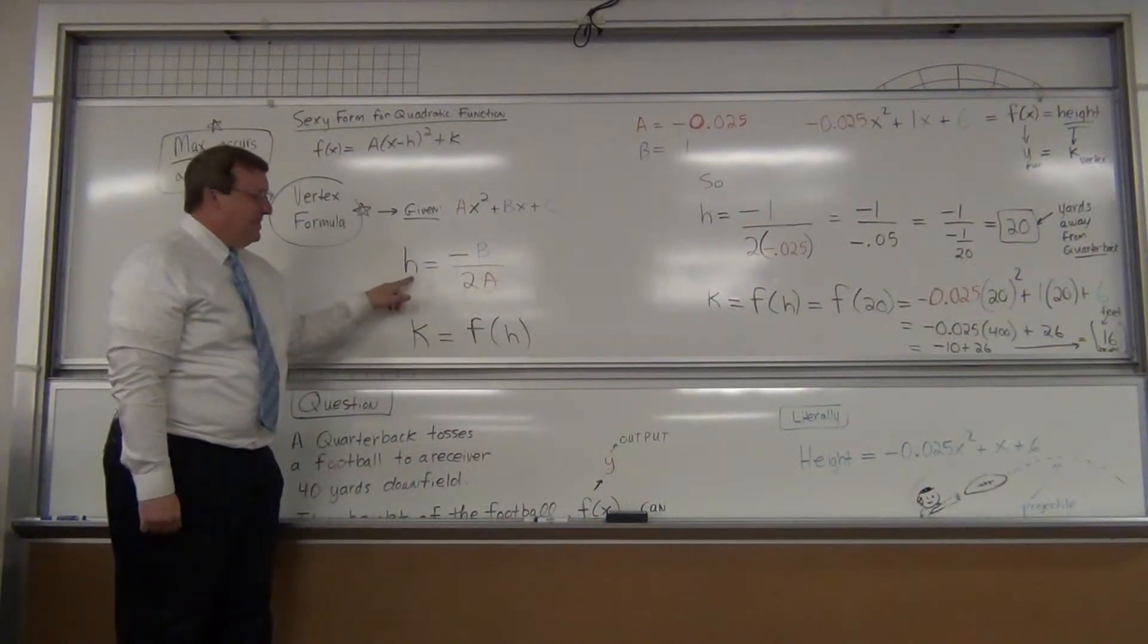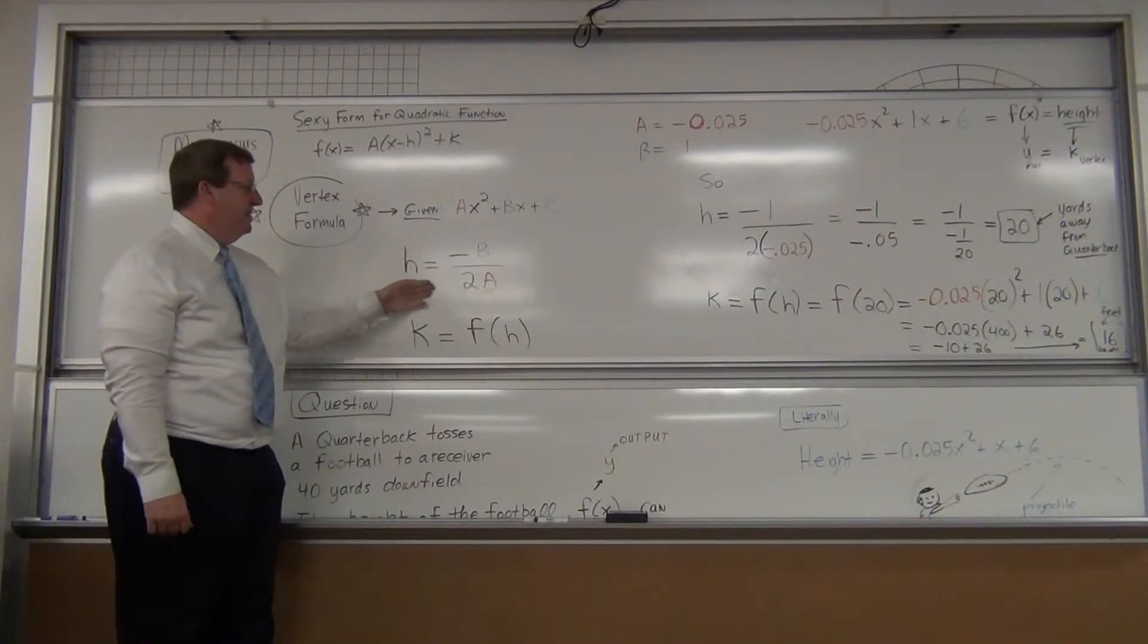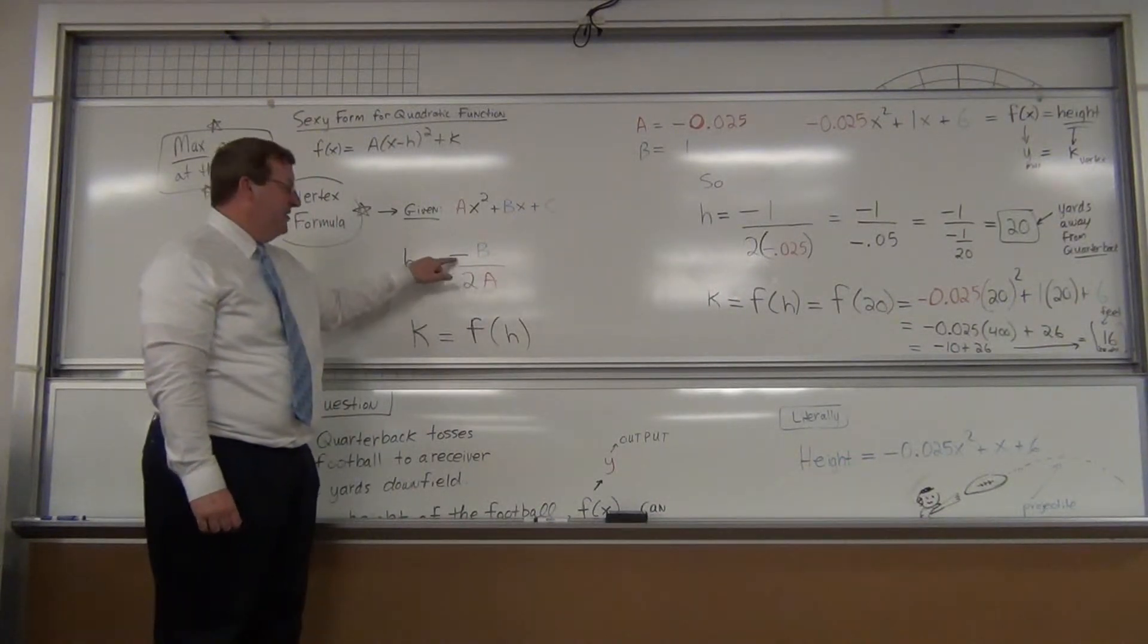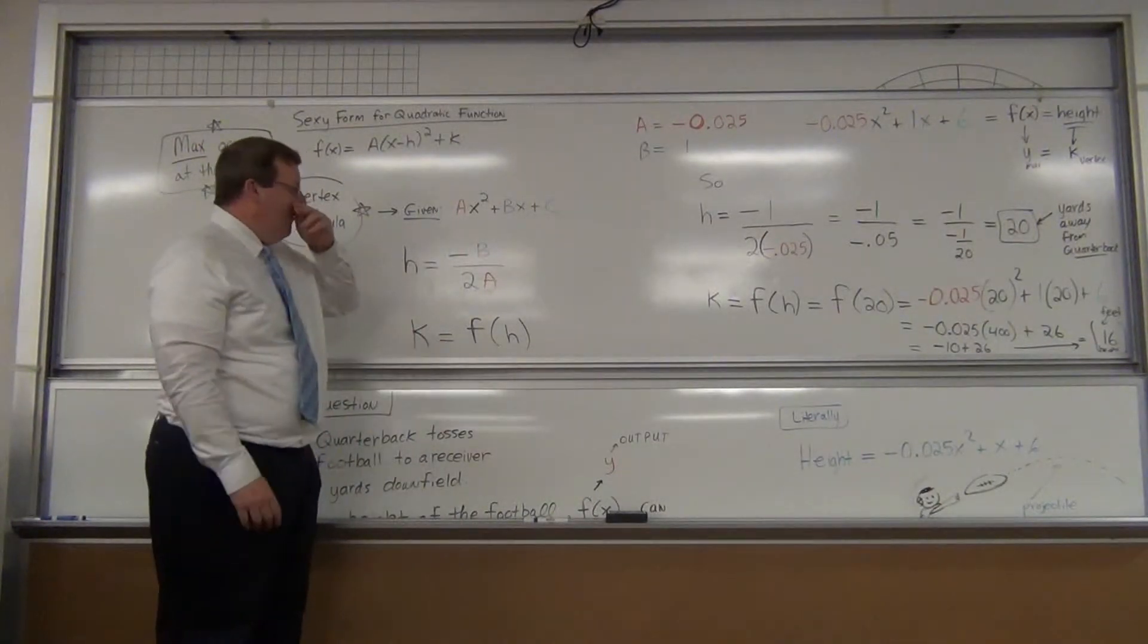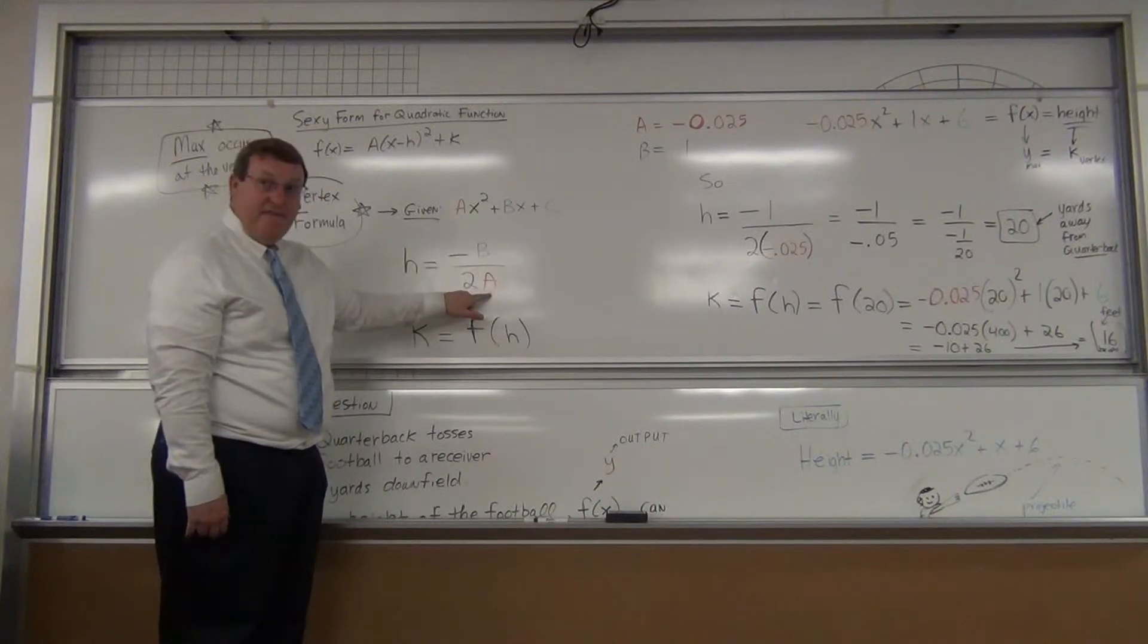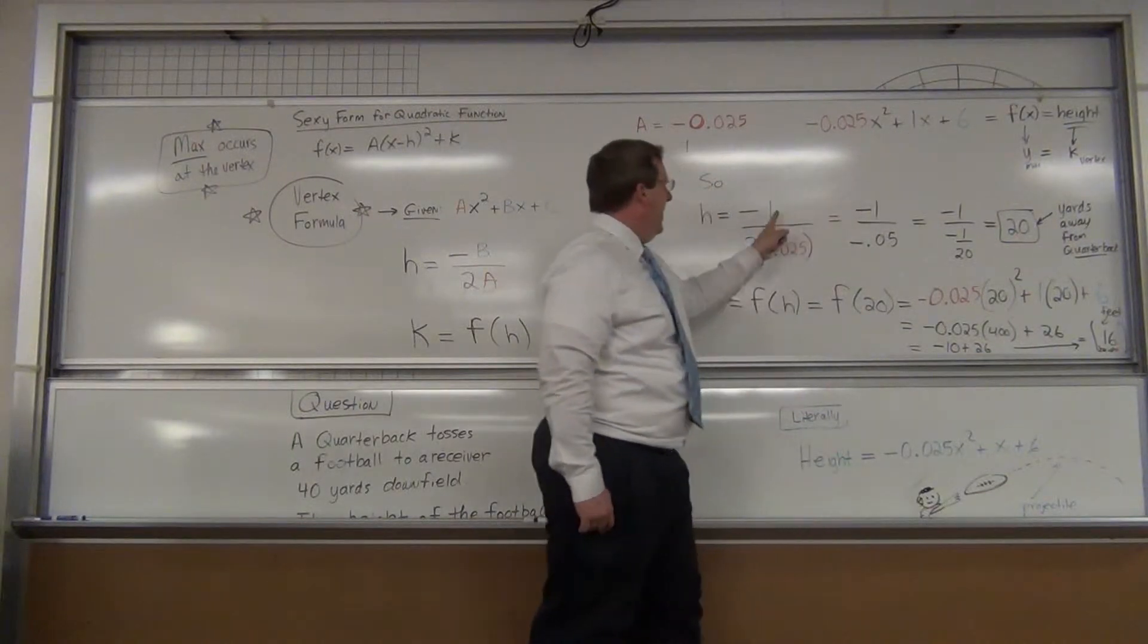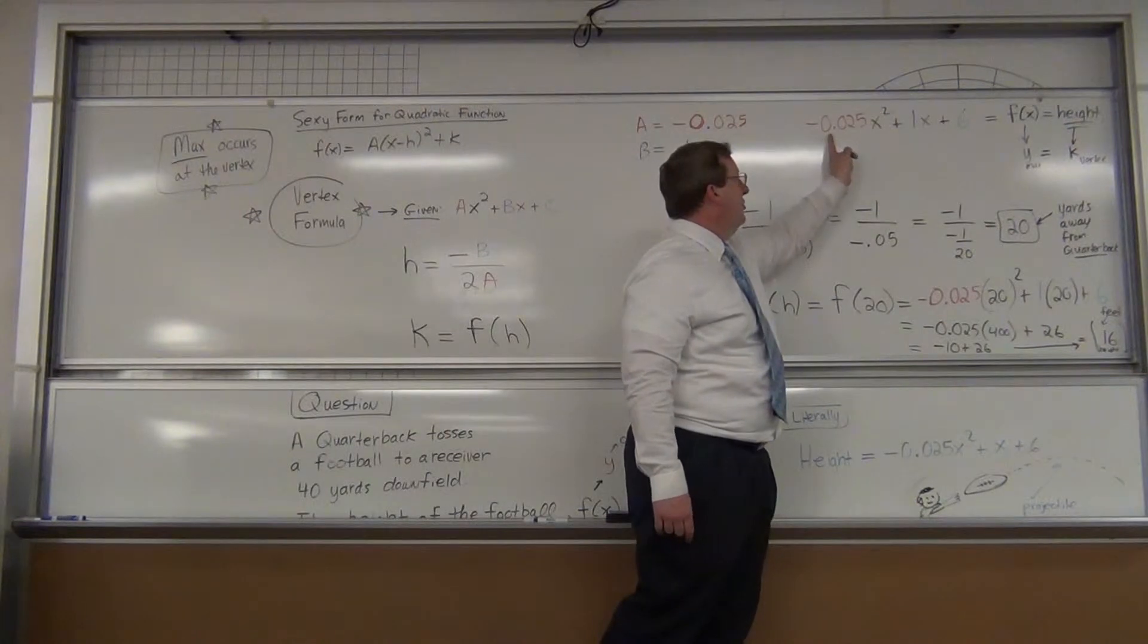The formula: the h value of the vertex—remember h is the x coordinate of the vertex—the formula is negative b divided by 2a. This is just the formula. Don't ask yourself where the negative or the 2 came from, it's just the formula and go with it. We just need to find the b value which is in front of the x and find the a value which is in front of the x squared. Come over here: what's in front of the x? One, so that's where my b is going to be, one. What's in front of the x squared? Negative 0.025.